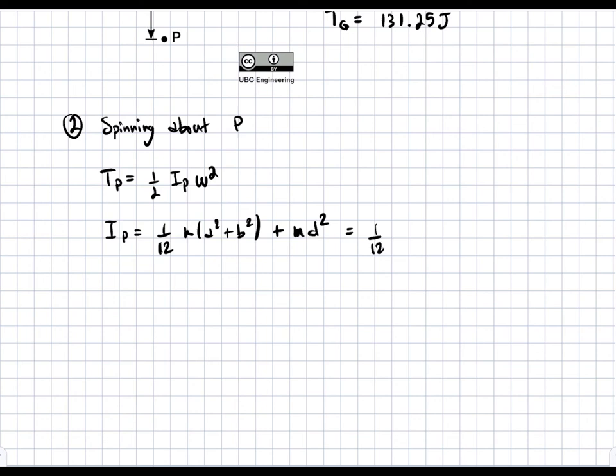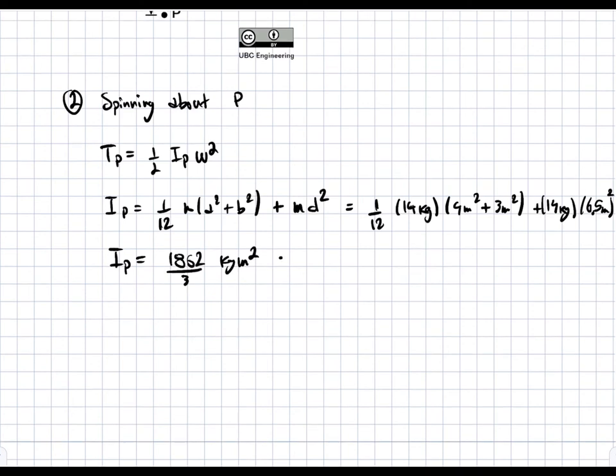And that extra term is the parallel axis term. So if we plug everything in, we get 1 over 12 times 14 kilograms times 4 meters squared plus 3 meters squared plus 14 kilograms times 6.5 meters squared. And so I_P is equal to 1862 divided by 3 kilograms meters squared, which is also equal to 620.7 kilograms meters squared.